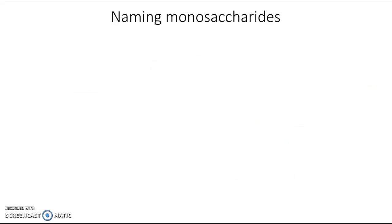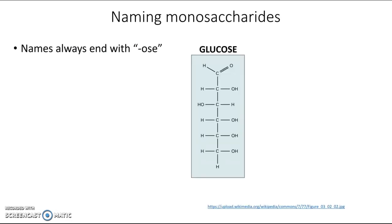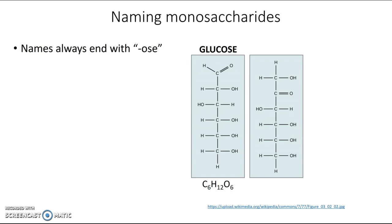In terms of their names, monosaccharide names always end with the suffix "-ose". Glucose has six carbons, so its formula is C6H12O6. Here's another molecule that also has six carbons and the formula C6H12O6, but the structure is slightly different — the carboxyl group is in a different position. So this is an isomer; it's not glucose. This one is fructose.